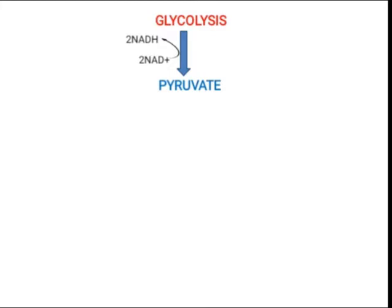This pyruvate will go to the cycle and will follow it. The conditions in which this pyruvate follows the cycle vary with respect to eukaryotic cells and prokaryotic cells, which I have already explained in detail in my previous lecture, which I will give you in the description of this video.